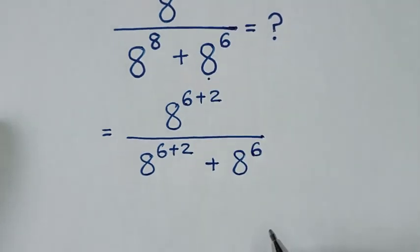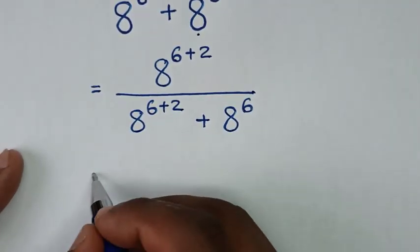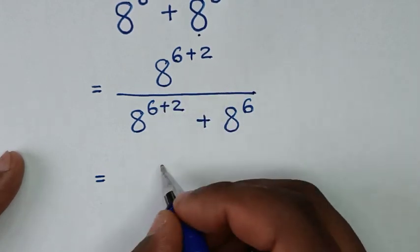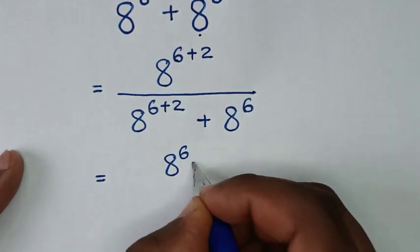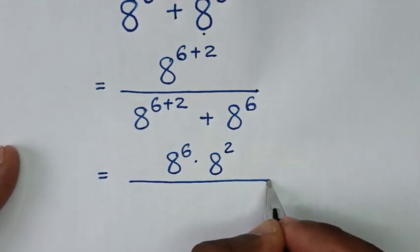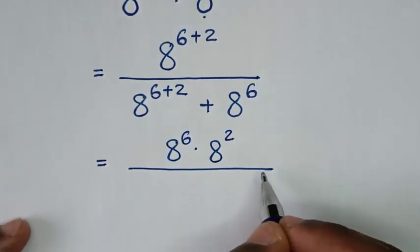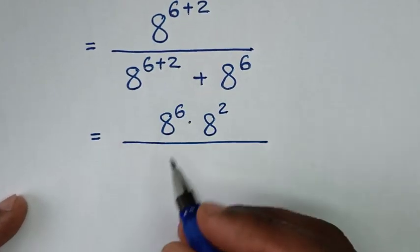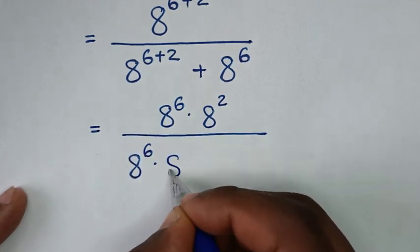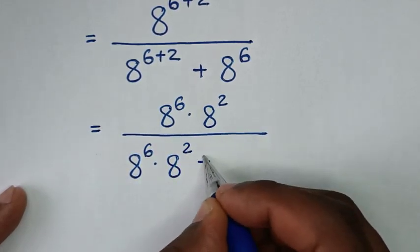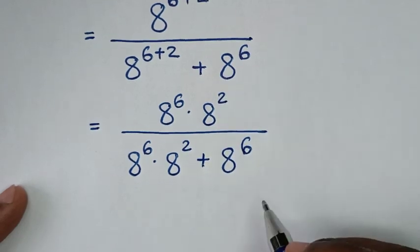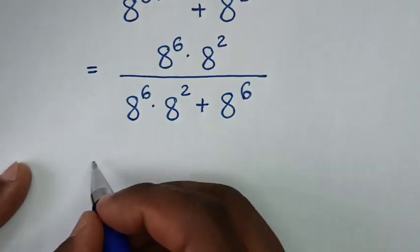In the next step, 8 power 6 plus 2 is the same as 8 power 6 times 8 power 2. In the denominator, 8 power 6 plus 2 is likewise the same as 8 power 6 times 8 power 2, plus 8 power 6.